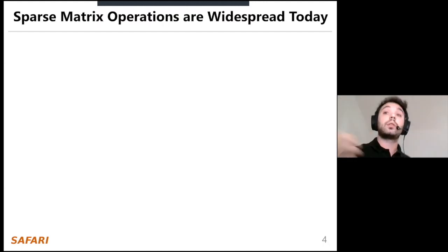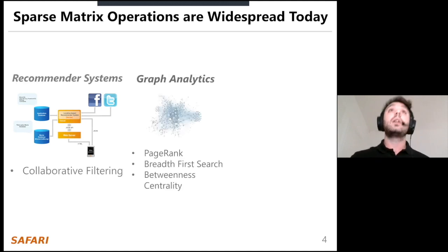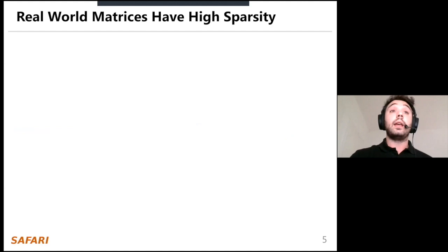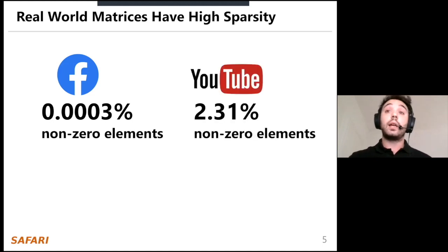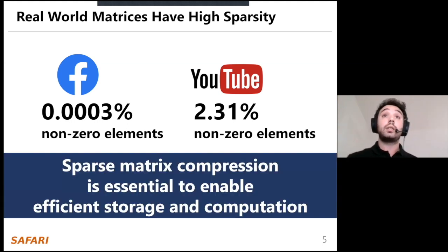Sparse matrix operations are widespread today. They are critical components of application domains like recommender systems and collaborative filtering, graph analytics with applications like PageRank, breadth-first search, and betweenness centrality, as well as sparse DNNs and graph neural networks. Real-world matrices used in these applications have extremely high sparsity — for example, Facebook's and YouTube's connectivity graphs have a very low amount of non-zero elements compared to the full adjacency matrix. Sparse matrix compression is therefore essential to enable efficient storage and computation.